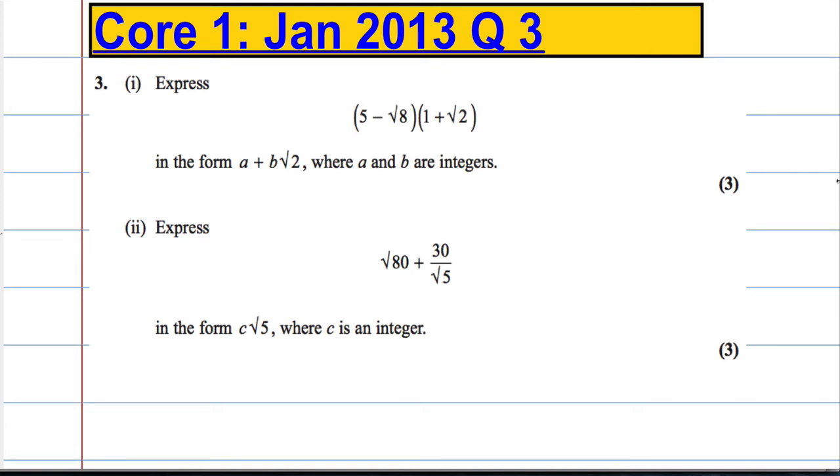Right, so we've got a two-part question here. In part one, we're asked to express (5 - √8)(1 + √2) in the form a + b√2, where a and b are integers.